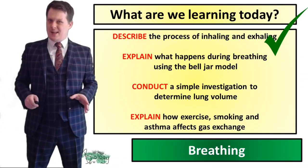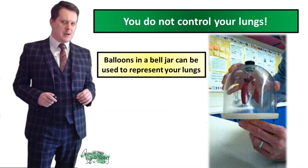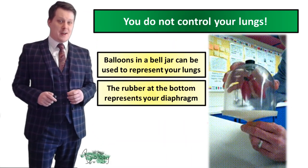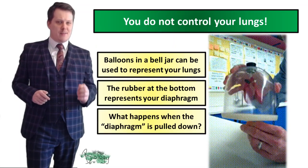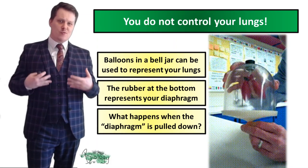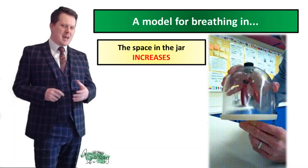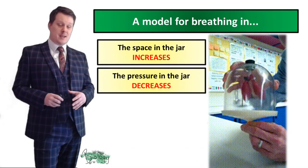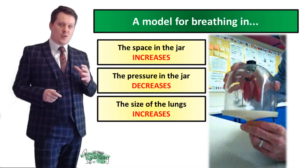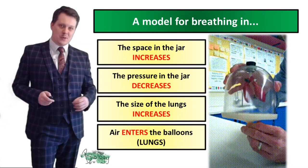We've now described the process of inhaling and exhaling. You do not directly control your lungs. In the bell jar model, the balloons represent your lungs and the rubber at the bottom represents your diaphragm. When you pull the diaphragm down, the balloons inflate. It is your control of the intercostal muscles and the diaphragm which causes your lungs to inflate. When the diaphragm is pulled down, space in the jar increases, pressure decreases, and the size of the lungs increases to equalize that pressure, causing air to enter.